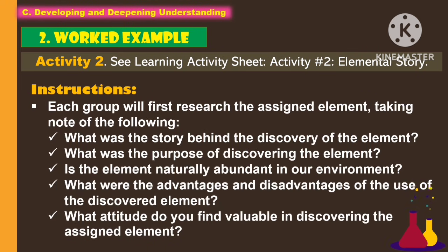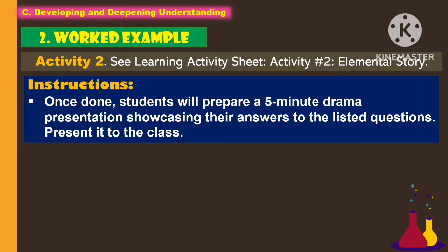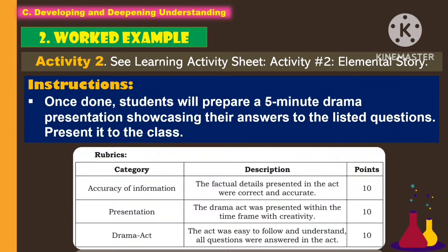Each group will first research their assigned element, taking note of the following: What was the story behind the discovery of the element? What was the purpose of discovering the element? Is the element naturally abundant in our environment? What were the advantages and disadvantages of the use of the discovered element? And what attitude do you find valuable in discovering the assigned element? Once done, students will prepare a 5-minute drama presentation showcasing their answers to the listed questions, and present it to the class.